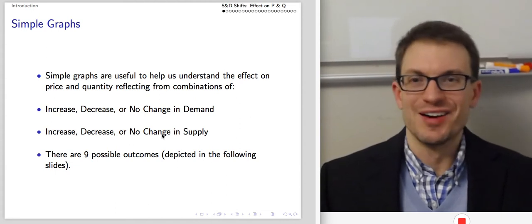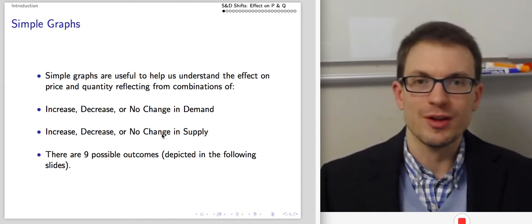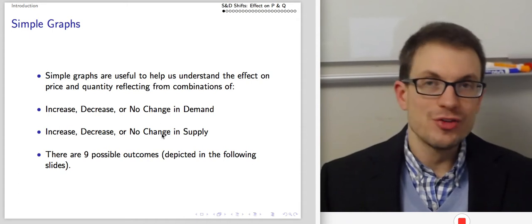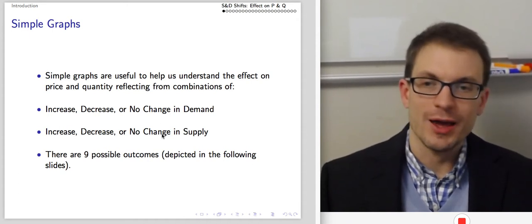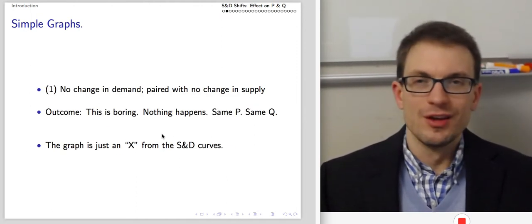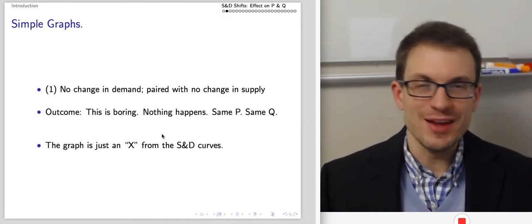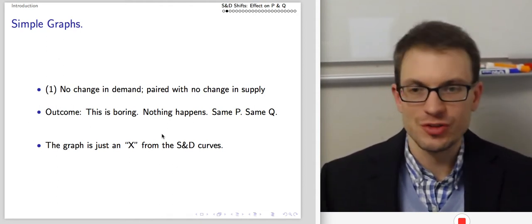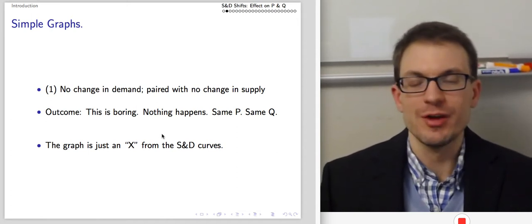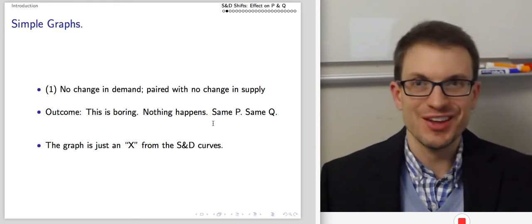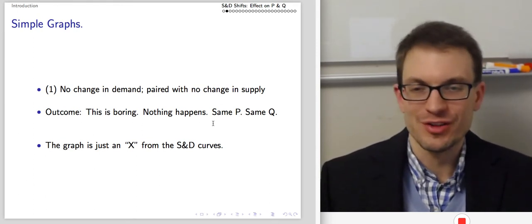Simple graphs are useful to help us understand the effects on price and quantity, reflecting different combinations of increases, decreases, or no change in demand, or increases, decreases, and no change in supply. So there are nine possible outcomes. In the first case, suppose there's no change in demand and no change in supply — it's pretty boring. Nothing happens, so I'm not even going to bother drawing the picture. We'll have the same price and same quantity persisting in equilibrium forever until something actually happens.